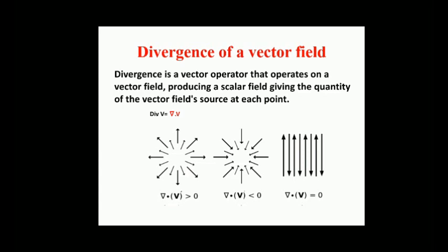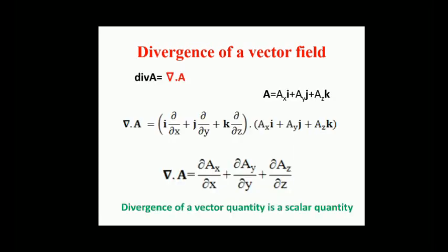While air is heated in a region, it expands in all directions and thus the velocity field points outward from that region. The divergence of the velocity field in that region would thus have a positive value. While the air is cooled and thus contracting, the divergence of the velocity has a negative value.